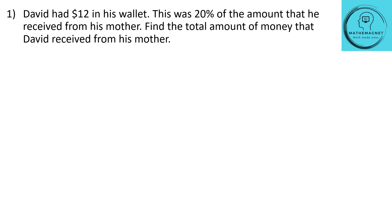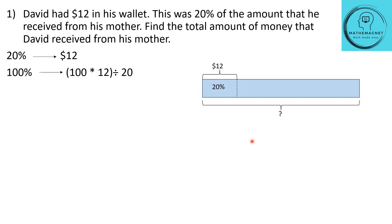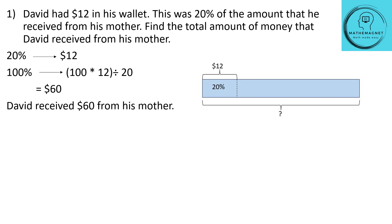Let's begin by drawing a bar model. Assume that this is the amount that David has received from his mother. So this will be your 100% and that 20% will be $12. Now we are asked to find the 100% of the amount. So 20% is $12, therefore 100% will be 100 × 12 ÷ 20, which is equal to $60. So David received $60 from his mother.